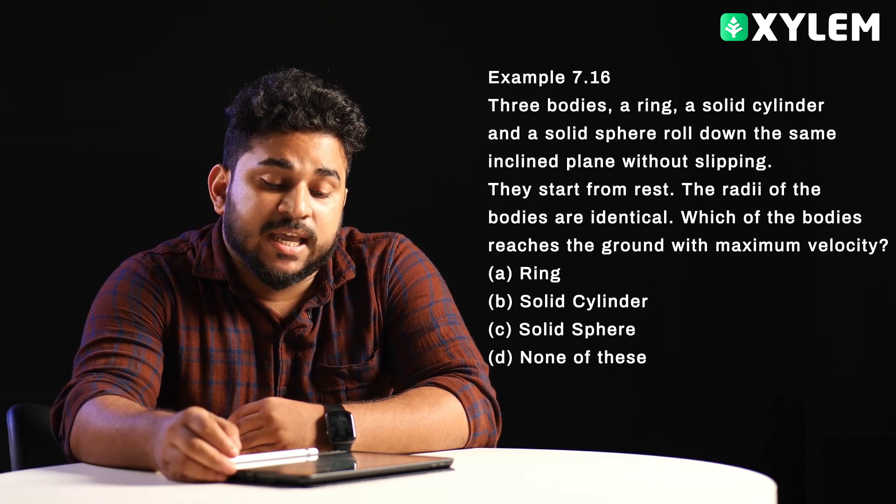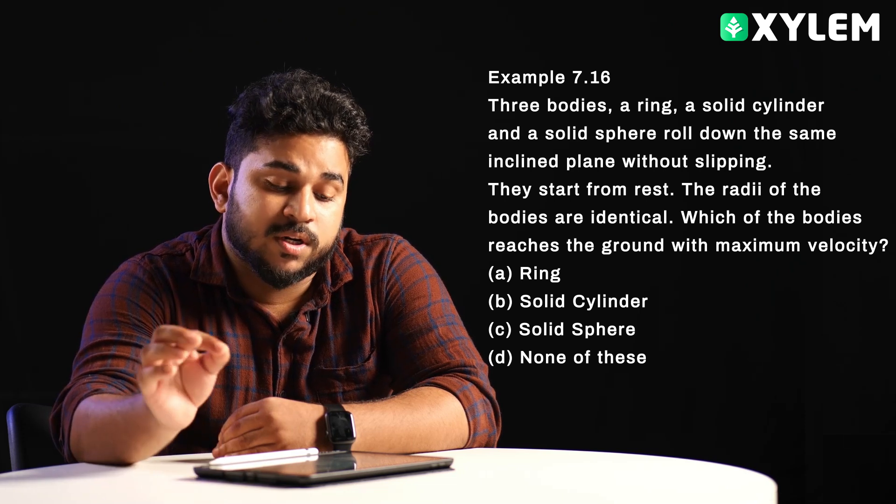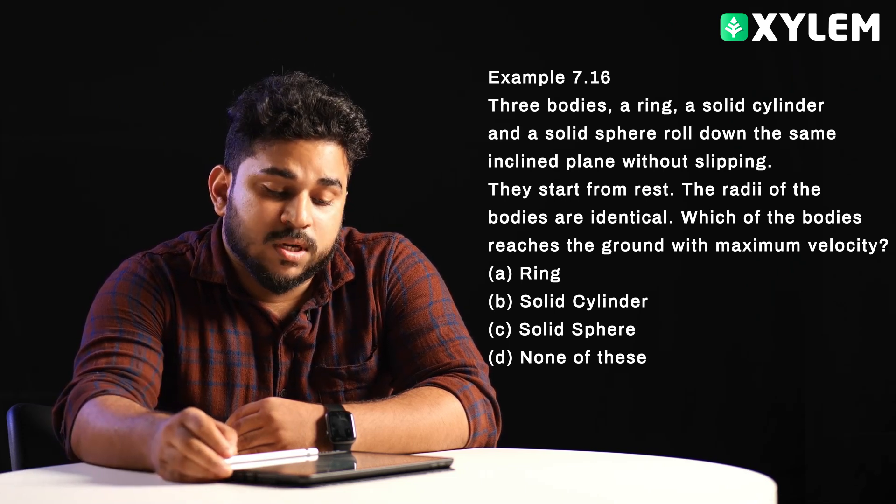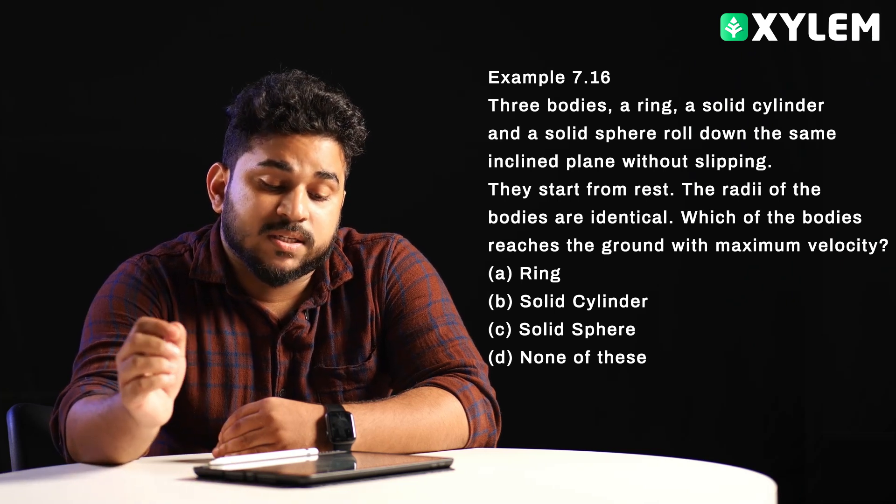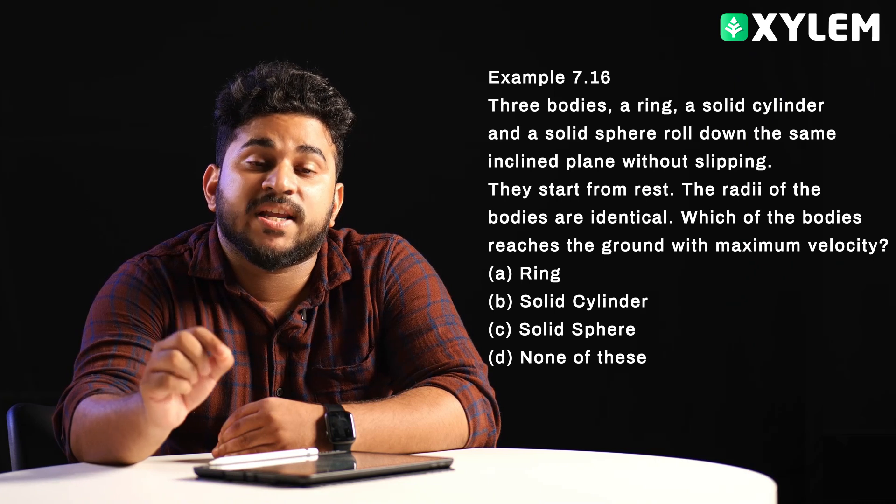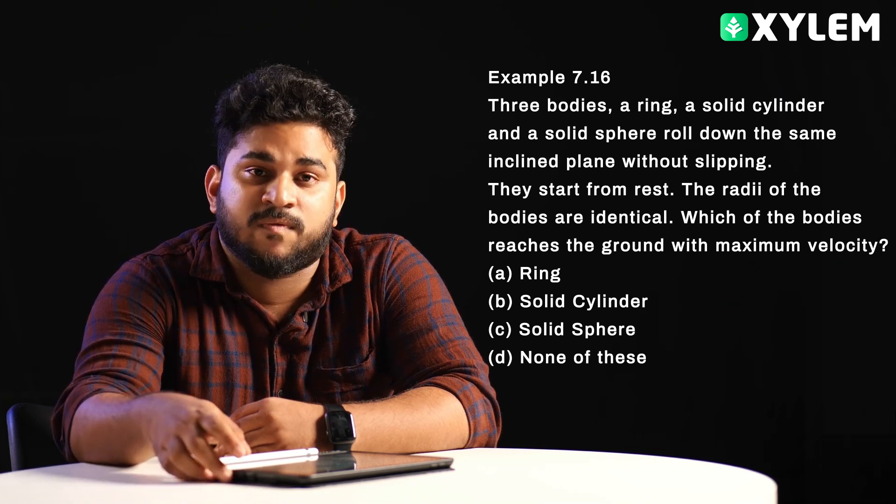Moving to next question, example 7.16: Three bodies - a ring, a solid cylinder, and a solid sphere - roll down the same inclined plane without slipping. They start from rest. The radius of the bodies are identical. Which of the bodies reaches the ground with maximum velocity?